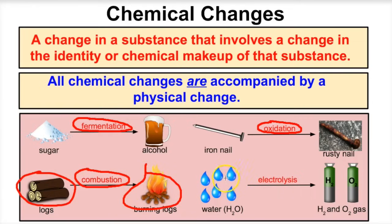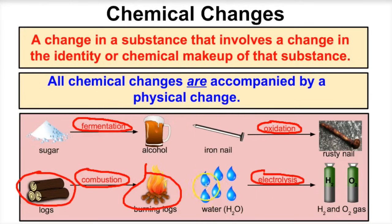If we take water — made up of two hydrogens bonded to one oxygen — and pass an electric current through it, what happens is the hydrogens break free from the oxygens, producing hydrogen gas and oxygen gas. So we have one substance, water, and end up with two brand new substances — hydrogen gas and oxygen gas. This too is an example of a chemical change.